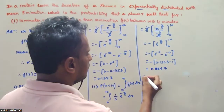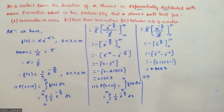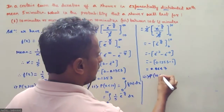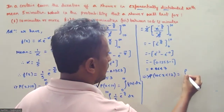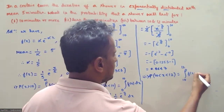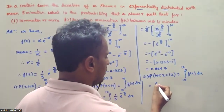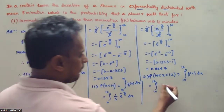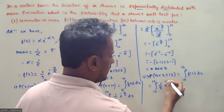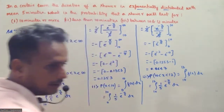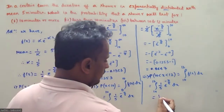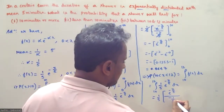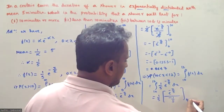For the third question, between 10 and 12 minutes: P(10 < X < 12) equals the integral from 10 to 12 of f(x) dx = integral from 10 to 12 of (1/5) e^(-x/5) dx. After integration, we get e^(-x/5) divided by (-1/5), with limit 10 to 12.